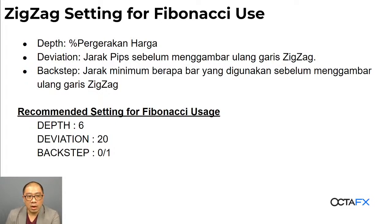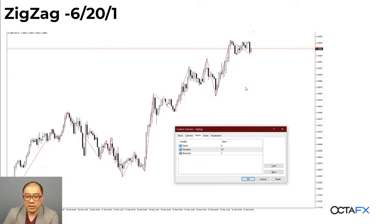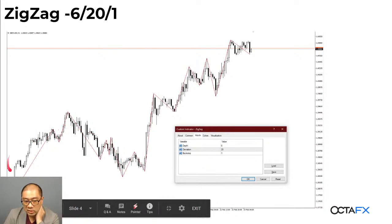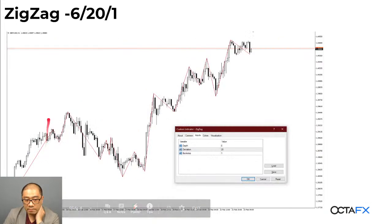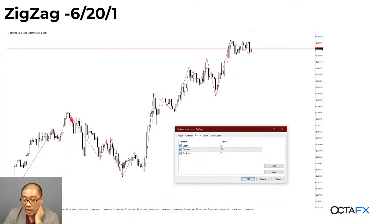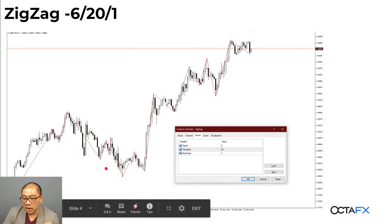Deviation-nya taruh di 20, jarakin 20 pip. Ini general rule aja — kalau kita gunakan ke market yang lebih volatile bisa saja beda, tapi deviation 20 so far so good, bahkan di Bitcoin juga masih bisa dipakai. Back step mau di 0 mau di 1 terserah, karena bagi saya sekarang saya mau nyari ultimate low dan ultimate swing-nya itu kapan, jadi saya nggak mau delay berapa bar. Jadi settingannya 6-20-1.